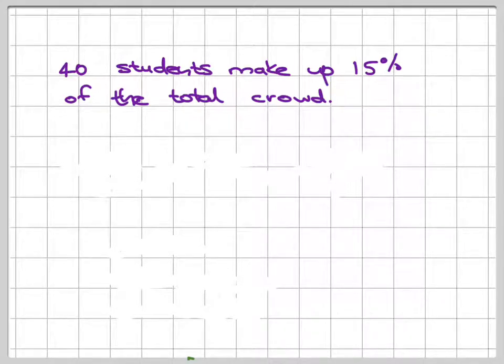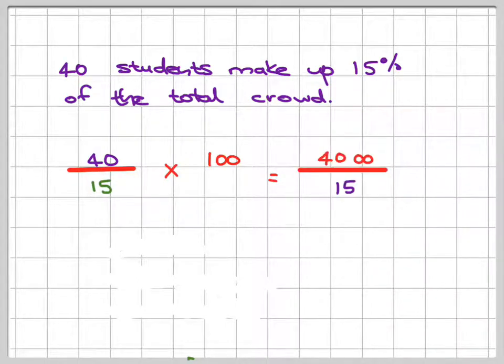Okay, so remember, known amount over known percent times 100. Known amount is 40 divided by known percent is 15 times 100. We come to 4,000 divided by 15 and then we end up with this number which has a recurring decimal.